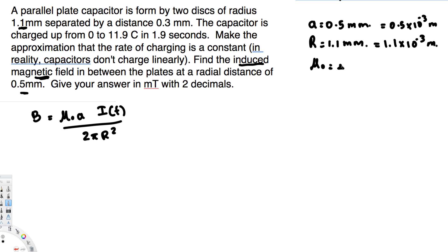Mu naught is always going to be 4 pi times 10 to the power of minus 7 henry's per meter.